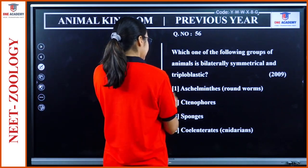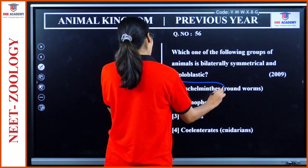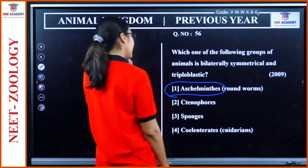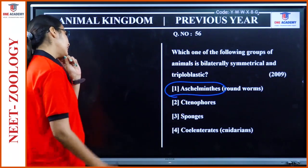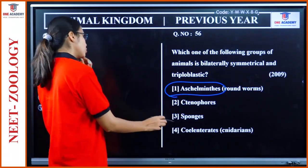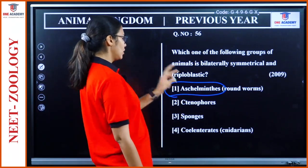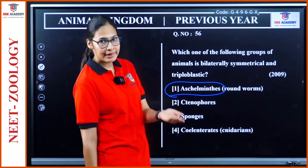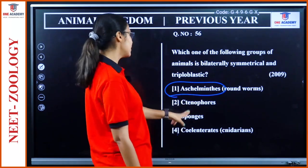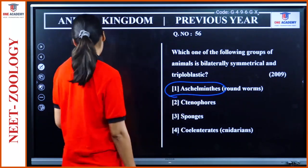Question 56: 'Which group of animals is bilaterally symmetrical and triploblastic?' Option 1 — Aschelminthes — bilateral and triploblastic is correct. Ctenophora — radial symmetry. Coelenterata — radial symmetry. Sponge — asymmetric.